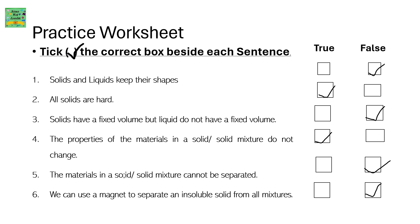Practice worksheet: tick the correct box beside each sentence. Solids and liquids keep their shapes — that's false, because solids keep their shapes whereas liquids don't. All solids are hard — it's true. Solids have a fixed volume but liquids do not have a fixed volume — that's false. Both of them have a fixed volume but liquids just change their shape. The properties of materials in a solid or solid mixture do not change — that's true.